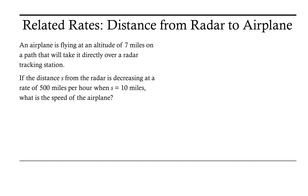Welcome. Let's take a look at a related rates problem involving the distance of an airplane from the radar. We have an airplane flying at an altitude of seven miles on a path that will take it directly over a radar tracking station. If the distance s from the radar is decreasing at a rate of 500 miles per hour when s equals 10 miles, what is the speed of the airplane?